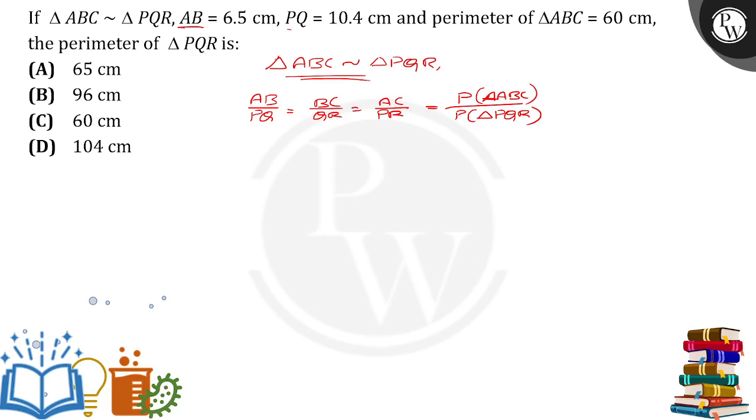Here it was given AB value and PQ value, so I am going to take these two ratios. AB by PQ is equal to perimeter of ABC triangle by perimeter of PQR triangle. So AB value is 6.5 by PQ value 10.4 is equal to 60 divided by perimeter of triangle PQR.